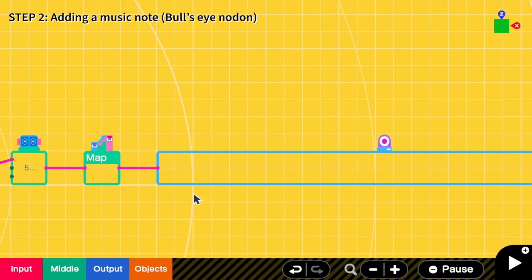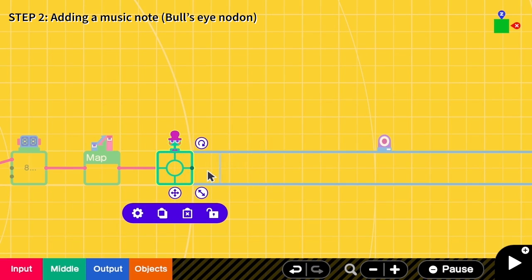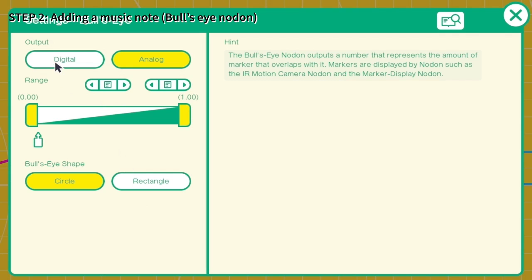We need to add a note. To do that we go to middle, bull's eye, and each bull's eye will act as a note. Then we go to the configure, reset the output to be digital because we want it to be either play or not playing. We change to digital.